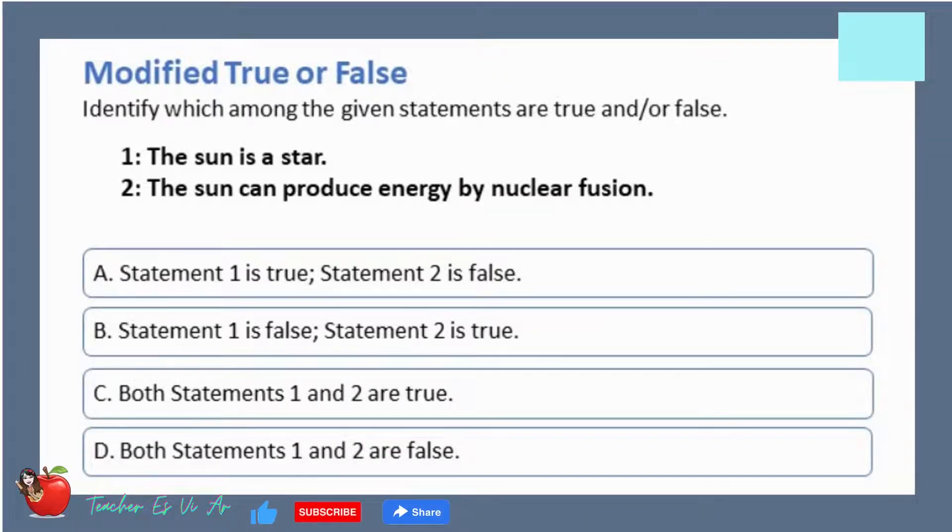Modified true or false. Identify which among the given statements are true and or false. 1. The sun is a star. 2. The sun can produce energy by nuclear fusion.